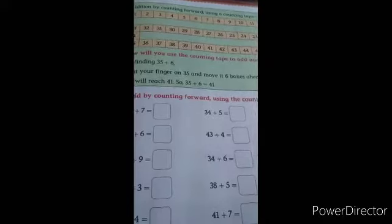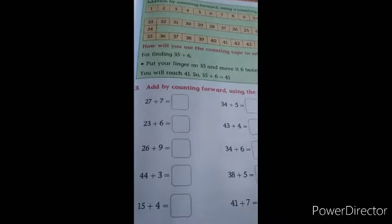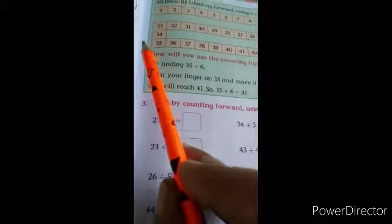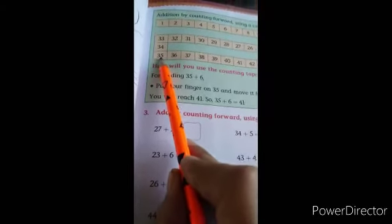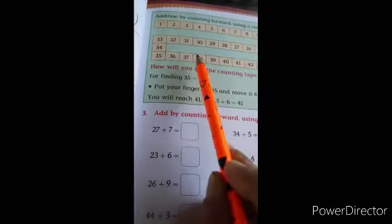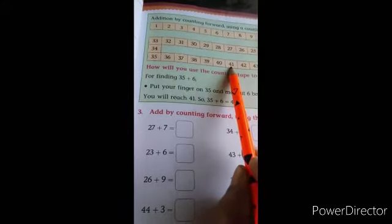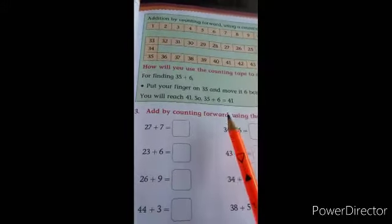See children, addition by counting forward using a counting tape. For finding 35 plus 6, see number 35 plus 6, go front 6 boxes: 1, 2, 3, 4, 5, 6. So answer will be 41.